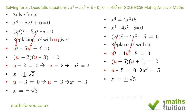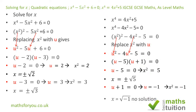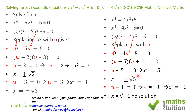For u plus 1 equals 0, u equals minus 1. Replacing u with x squared, we have x squared equals minus 1. Taking the square root of both sides gives x equals the square root of minus 1, which does not give any real solution. So the only valid answer is x equals plus or minus the square root of 5.